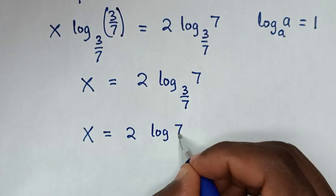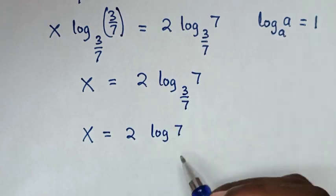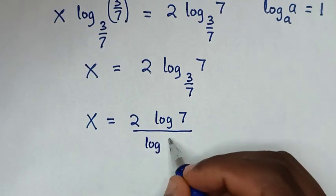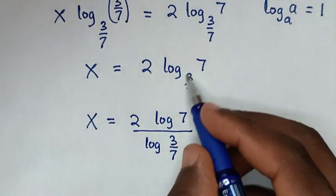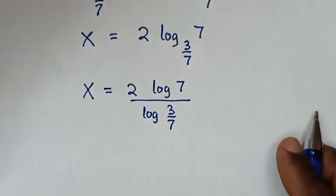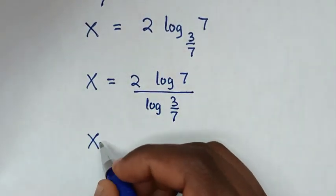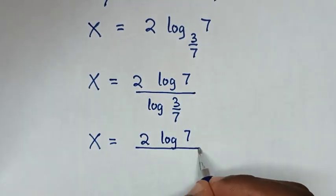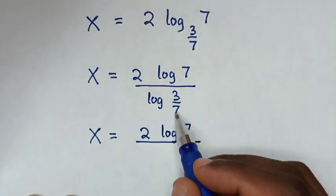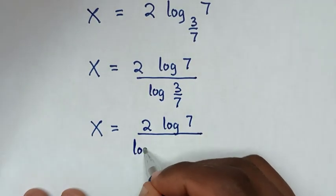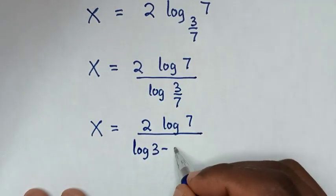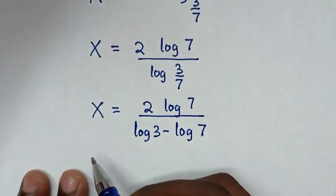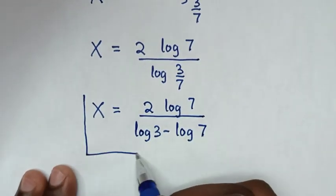Then x is equal to 2 log base (3/7) of 7, which is the same as 2 log of 7 over log of (3/7). In the next step, x is equal to 2 log of 7 over log of 3 minus log of 7. Therefore this is our final answer.